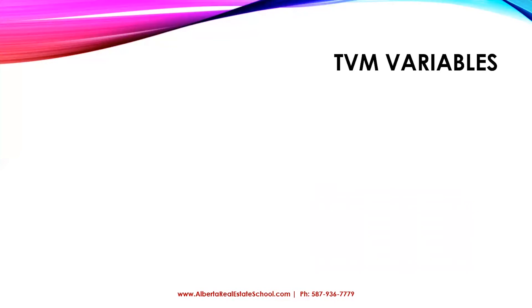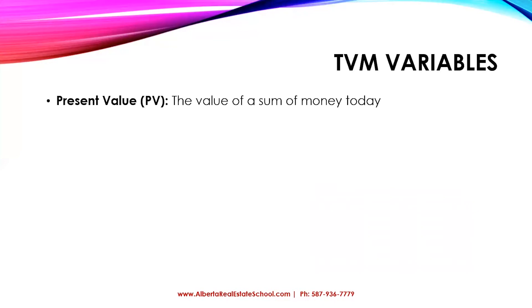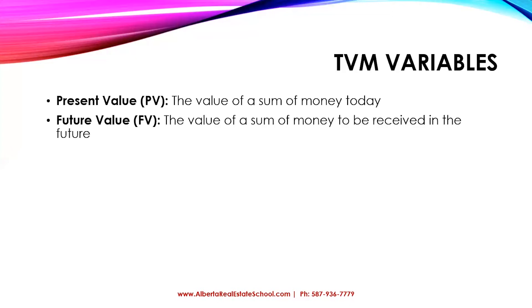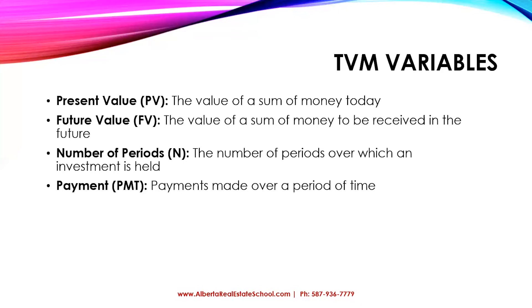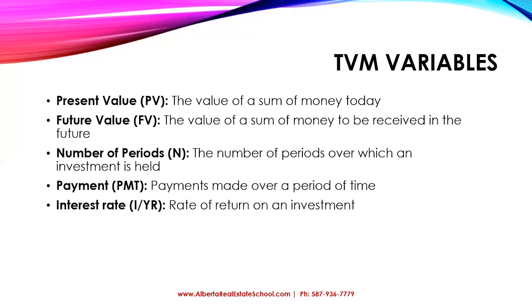Let's take a look at the different variables we will need when working with this concept. First is present value — the amount of money we have today, or what it would cost to buy something today. Then future value — the amount of money we will receive in the future. We also have N, the number of periods over which our investment will be held. Then payments — money made or received over a period of time, such as a mortgage payment going out or net operating income coming in. Finally, we have the interest rate.